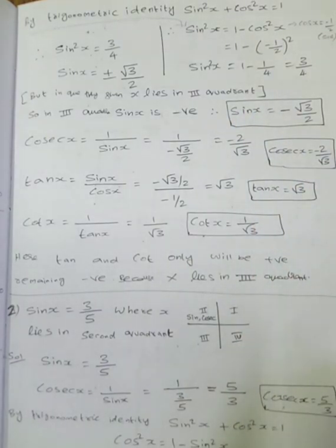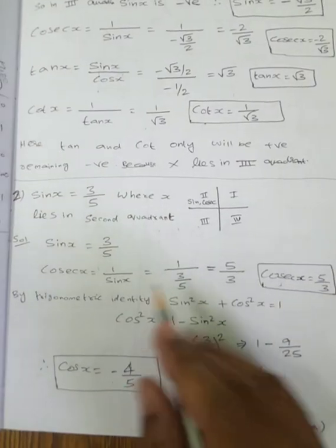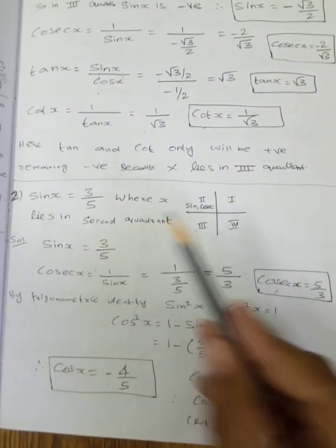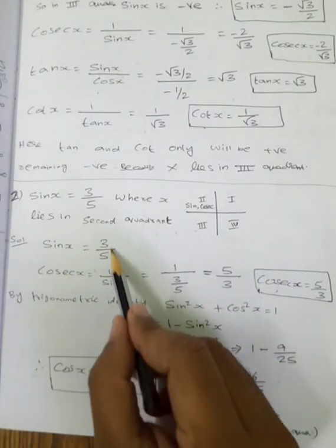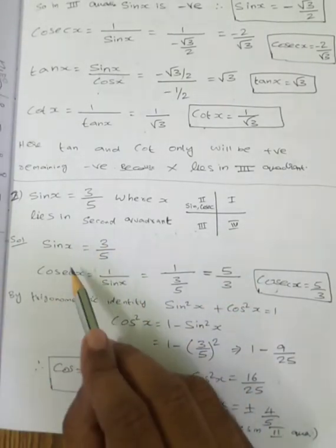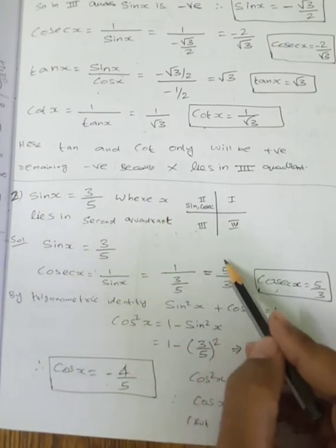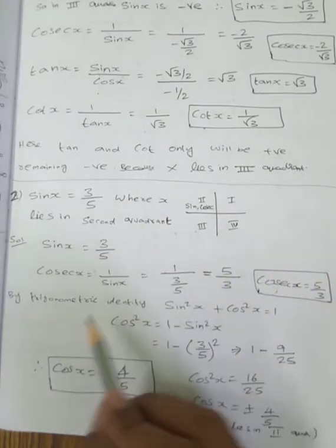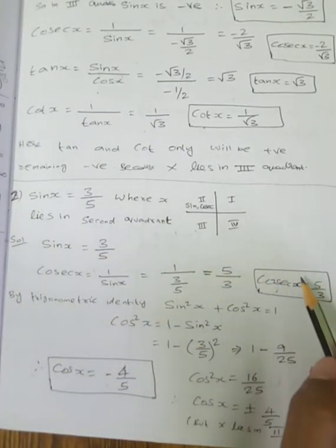Next question: sin x equals 3 by 5, where x lies in the second quadrant. Cosecant x is the inverse of sin. So 1 by sin x, which is 1 by (3 by 5), so cosecant x equals 5 by 3.